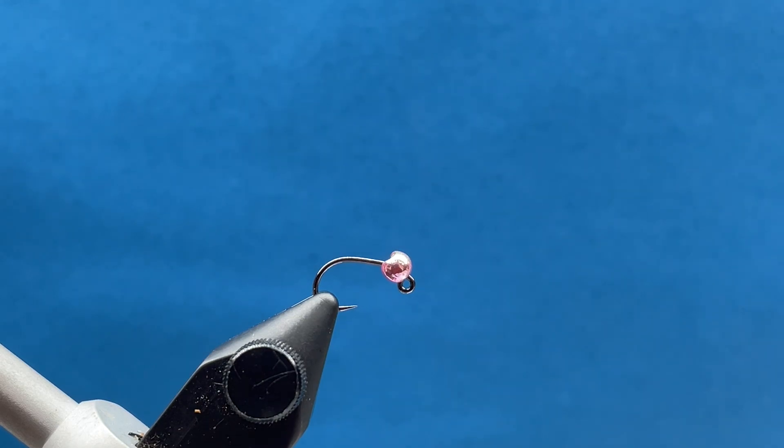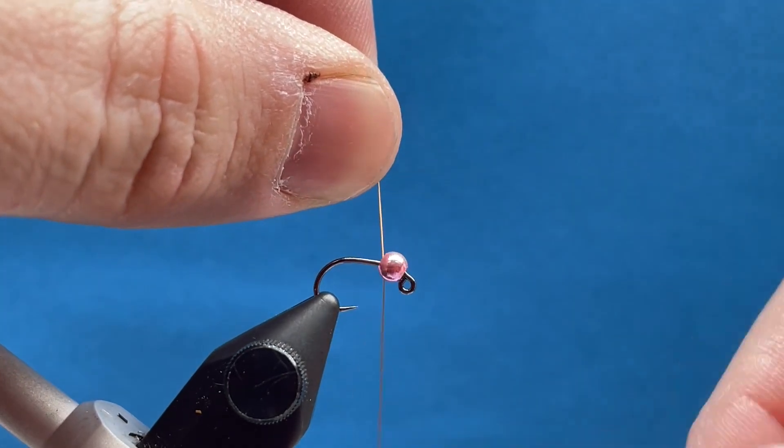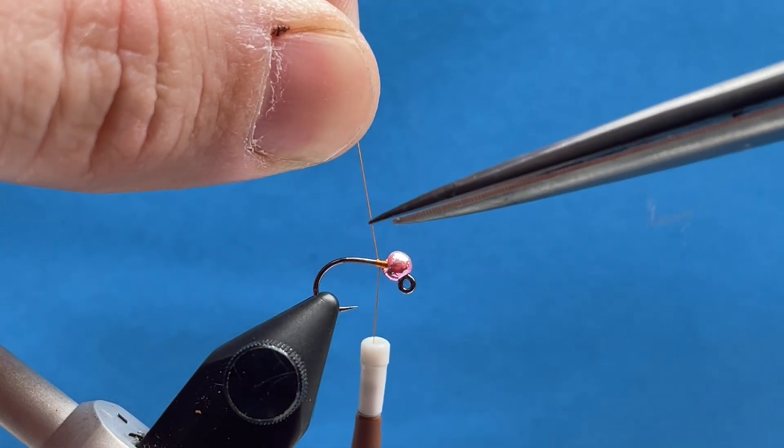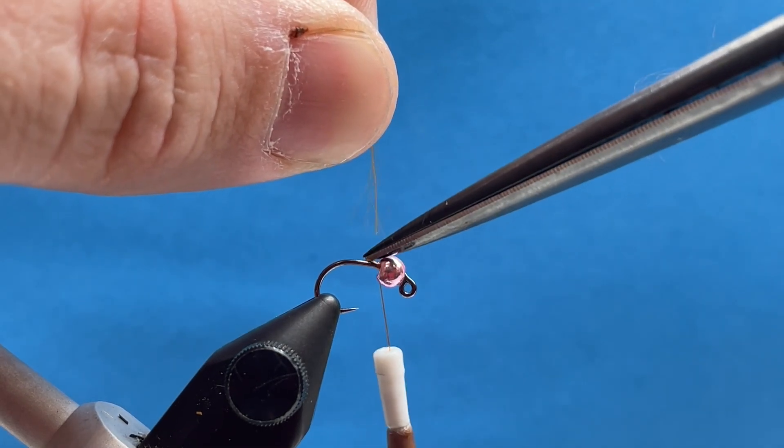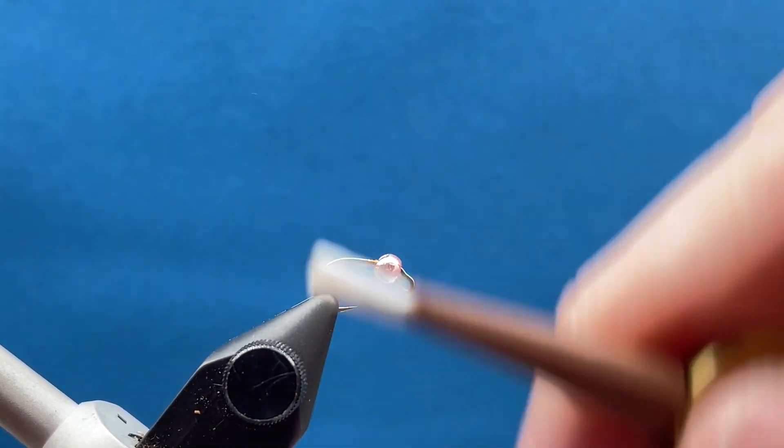It's a quick tie, you can do a whole different array of colors and sizes. This is a size 14 hook that you got in your box, an Ahrex hook, so it's a really good sharp sticky hook. I'm just going to start my thread here right behind the bead. You could choose to put lead on this if you want, I just prefer to just go with the bead weight alone.